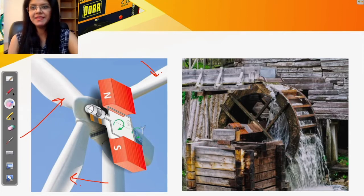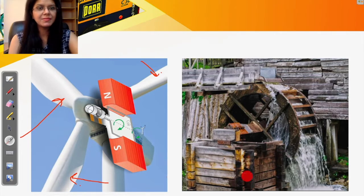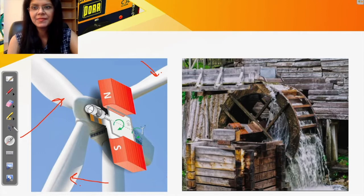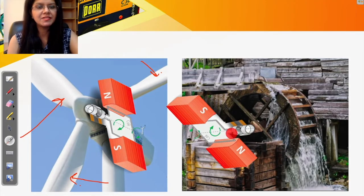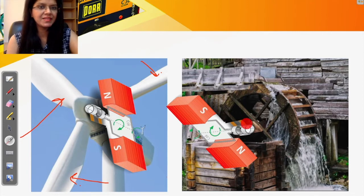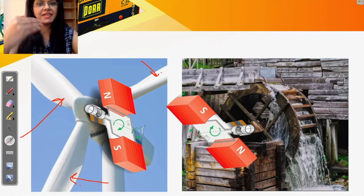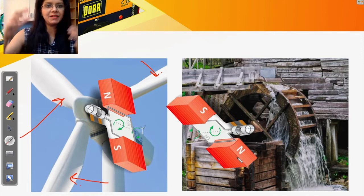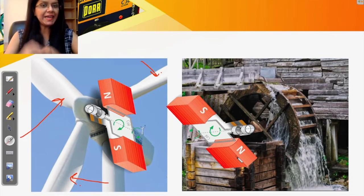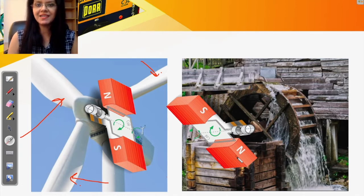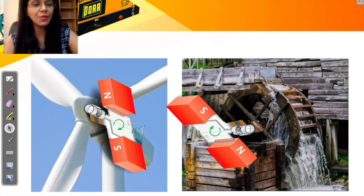Now let us look at the water turbine. The generator is located here. You have the rectangular coil permanently welded to the slip rings, which are attached to the center of this water wheel. When the water wheel rotates, the slip rings rotate, and as a result the rectangular coil also starts rotating in between the two magnets. You have a conductor moving in a magnetic field region — and what do you get as a result? You get electric current.